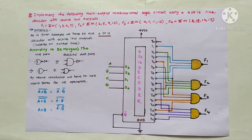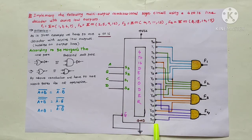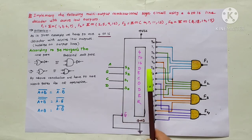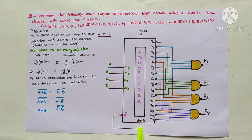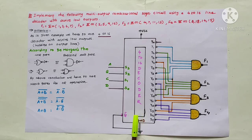For this 4-to-16 line decoder with active low outputs, 4 select lines are necessary and they are A, B, C, D connected to S3, S2, S1, S0 respectively. Positive VCC and ground supply are given for biasing. The most important additional input is the strobe or enable input, which is always connected to ground to make this decoder circuit active.